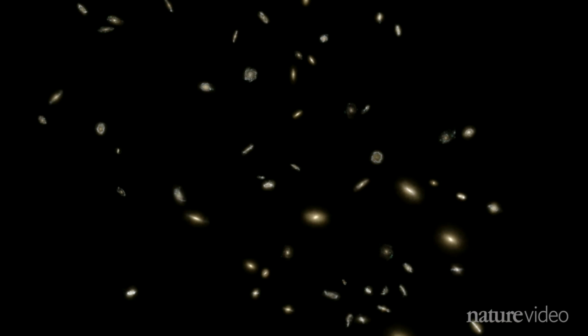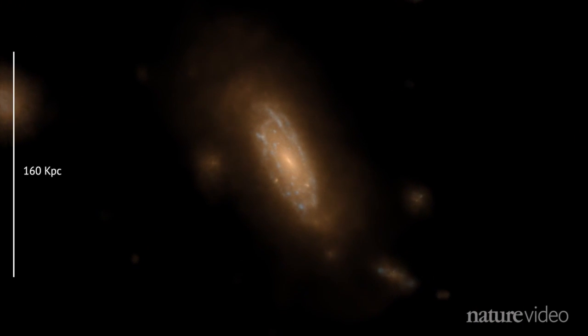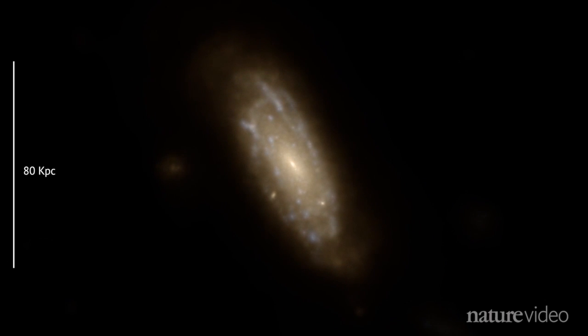A big challenge, the team says, was recreating the variety of galaxies we observe. The model's 40,000 galaxies include this spiral one, like our Milky Way.